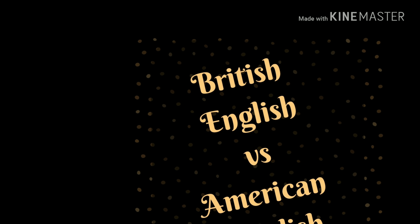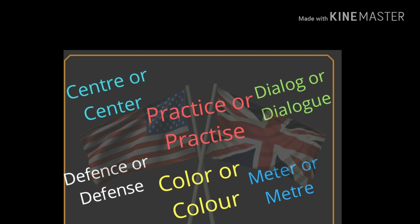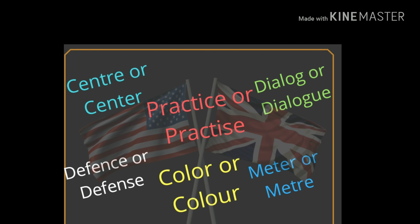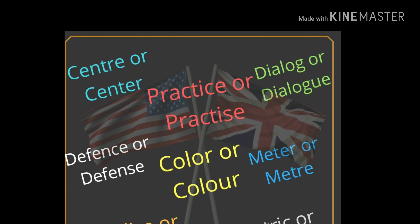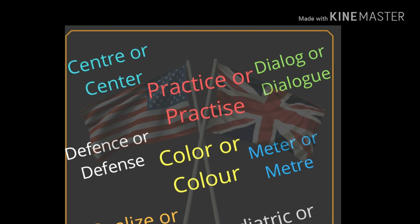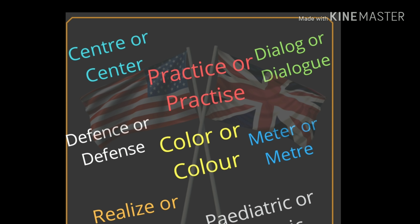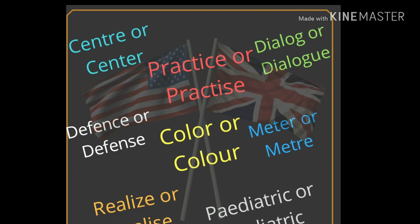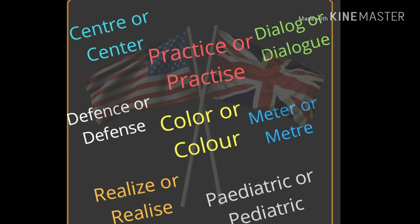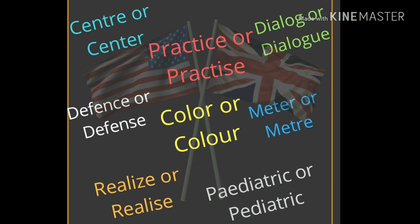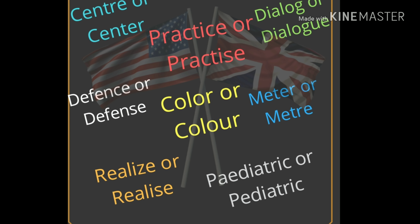Today we will discuss British English and American English. As you must have observed, there are some words regarding which we get confused about spelling — like 'center': should it be T-R-E or T-E-R? 'Defense': should it be F-E-N-C-E or F-E-N-S-E? Words like color, meter, realize, pediatric, dialogue. This confusion is because of the difference between British and American English. Remember: in exams and competition level, you need to spell according to British English, because in India we follow British English.